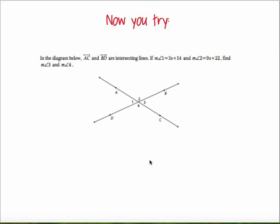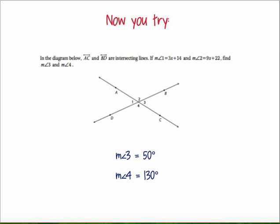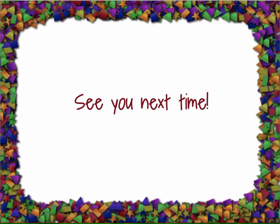Now you try. Go ahead and draw this picture on a piece of paper, label the angles that are given, and let's see if you can find the measure of angle 3 and the measure of angle 4. Pause the video while you work it out. Make sure to label your picture and pay attention to angles that are congruent or supplementary if you're having a hard time. The measure of angle 3 ends up as 50 degrees and the measure of angle 4 is 130 degrees. If you got it right, great! If not, pause the video and go back and check your math. That's going to wrap it up for today — I hope you have a fantastic rest of your day and I'll see you next time.